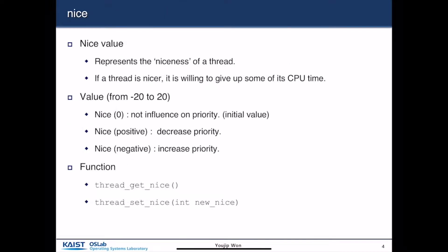The most important concept in the BSD scheduler is the concept of 'nice'. It's an integer value that represents the niceness of a thread. If a thread is nicer, it means the thread is willing to give up some of its CPU time. In Pintos, the nice value ranges from negative 20 to 20. A nice value of zero is the default and does not influence priority. If nice is positive, it decreases the priority. If nice is negative, it increases the priority of a process.